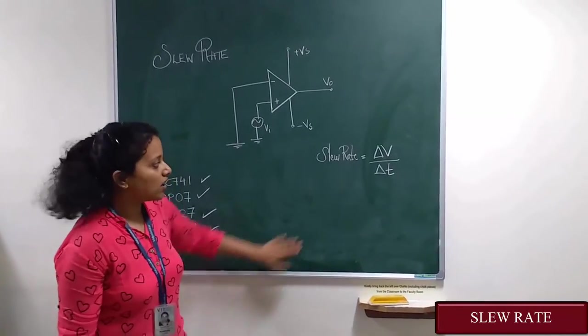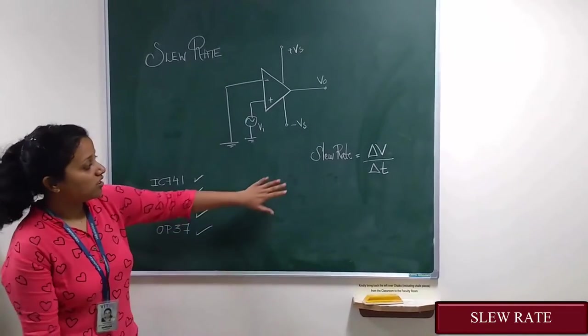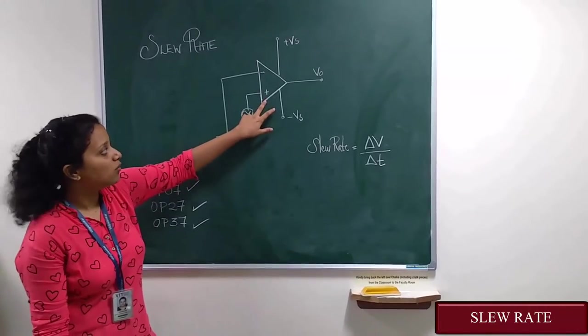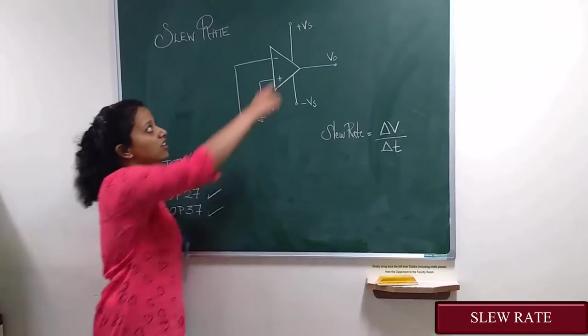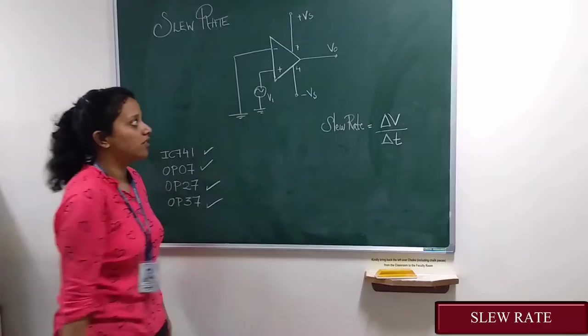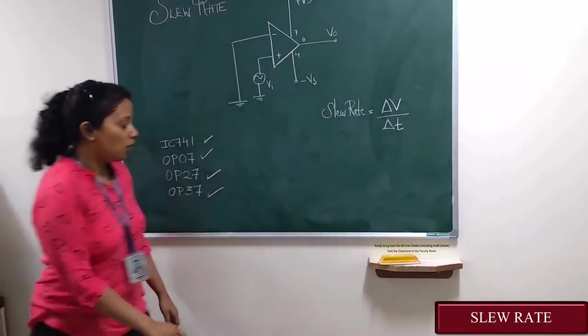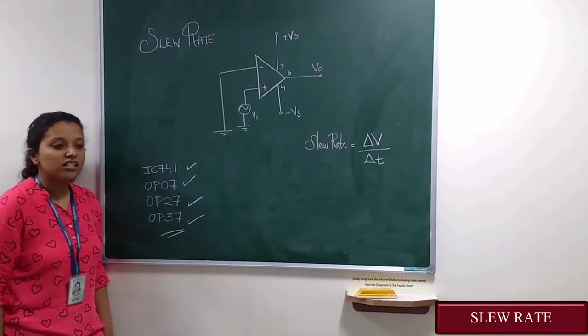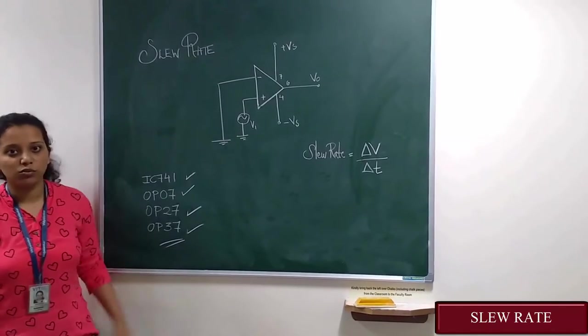We know that slew rate is change in voltage upon change in time. Now for checking the slew rate, we are given input at the non-inverting terminal and the inverting terminal is grounded. The VS and minus VS are given on pin 7 and pin 4 respectively. Output is obtained at pin 6. Now theoretically we have seen that the slew rate of OP37 is maximum. Now let's check whether it is true or not.